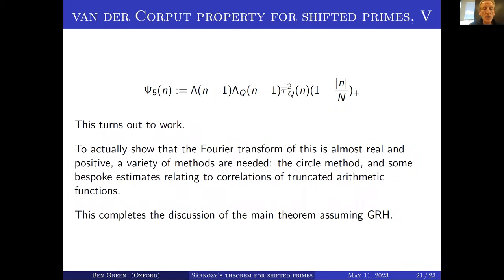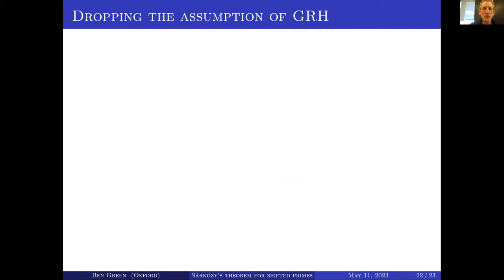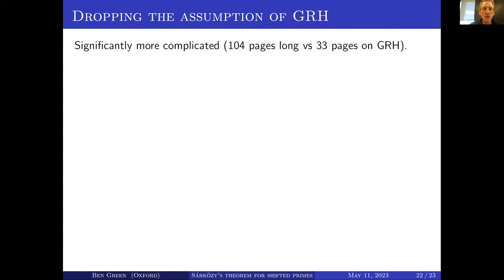To conclude, a few words about what happens if you don't assume the generalized Riemann hypothesis. This makes matters very significantly more complicated. The only paper I've made public is the one that doesn't assume GRH. The manuscript that does it with GRH is 33 pages long, but without GRH you need 104 pages.